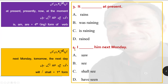Option number 4: I dash him next Monday. Options are: see, shall see, have seen. When a sentence contains 'next Monday', 'tomorrow', 'the next day', it refers to future tense. In such sentences, will or shall plus first form is used. With 'I', we use 'shall'. So the answer is: I shall see him next Monday — I will meet him on the coming Monday.